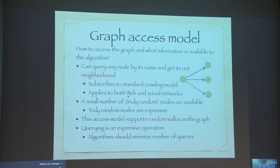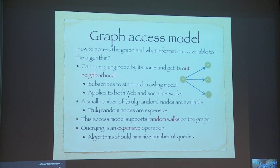On the other hand, even though this model is very simple and elegant, querying is inherently an expensive operation. Every time I touch the graph, I incur some cost — be it time, resources, or even API limitations. Twitter, for example, will not let me query their graph more than 10,000 times a day. There is a limit on how frequently I can touch their graph. Therefore, any algorithm we develop under this model has to perform as few queries as possible. That's the goal: minimize the number of queries.